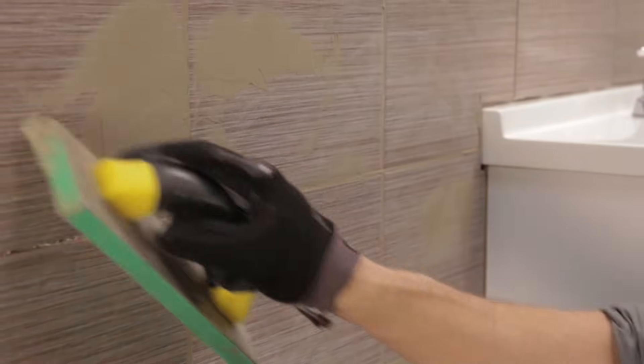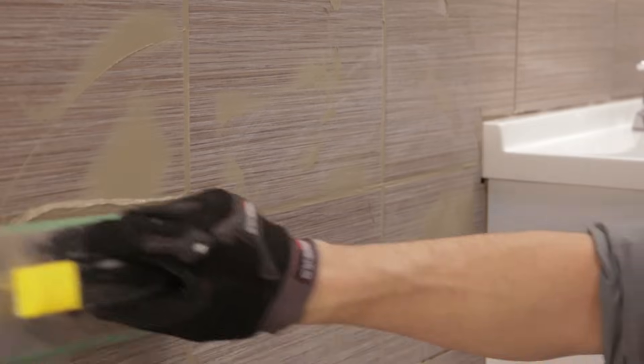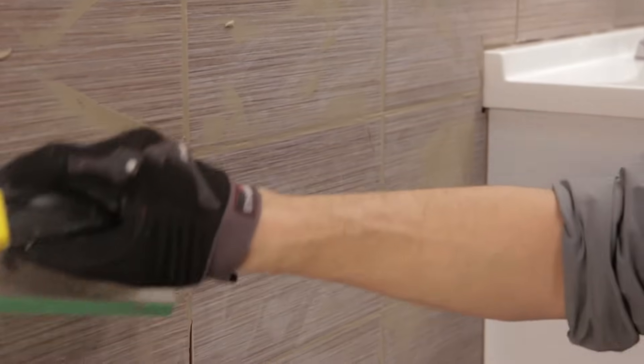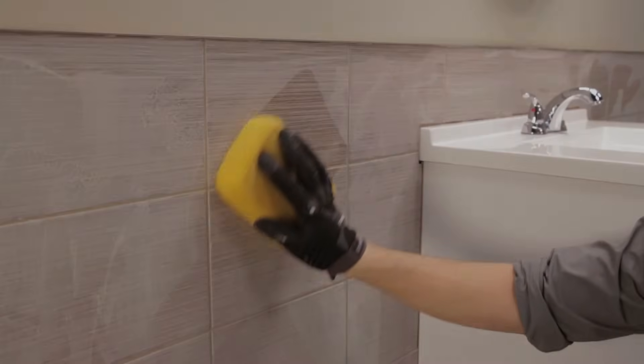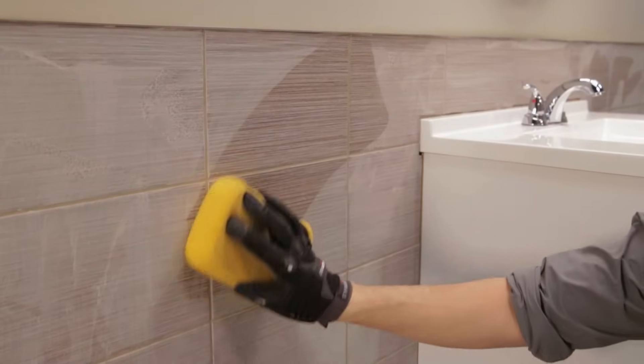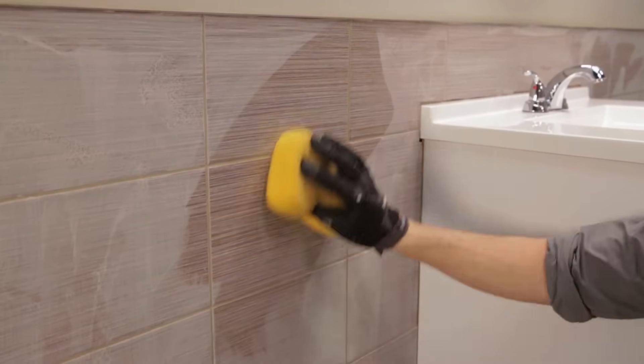Since grout dries fairly quickly, wipe off the excess as fast as possible. With the rubber float, remove the excess grout from the tiled surface. Then, clean the surface with a damp sponge, smoothing it diagonally over the tiles.